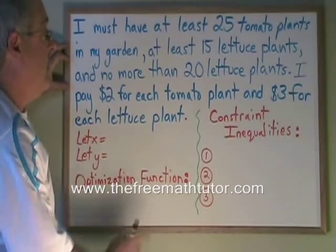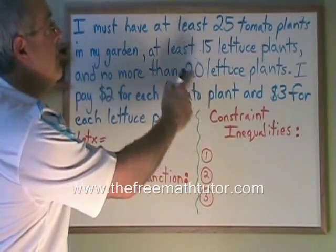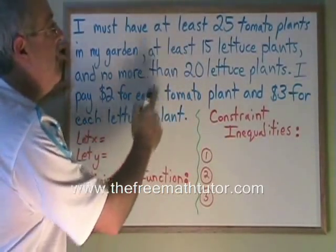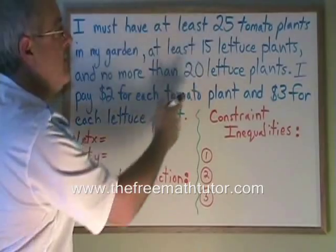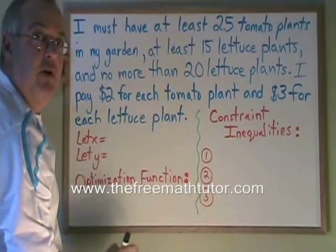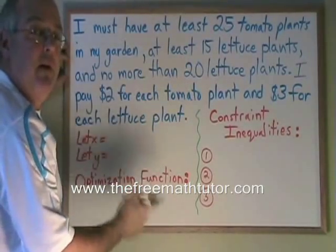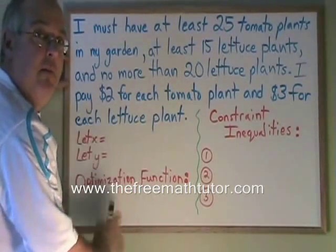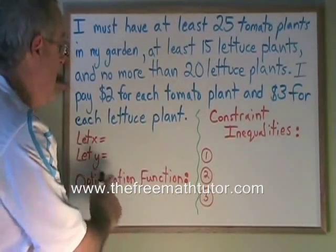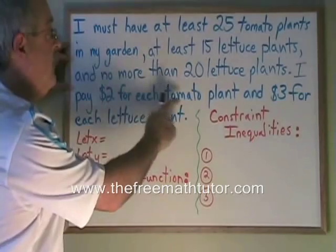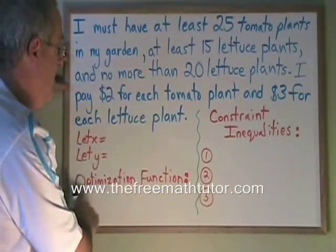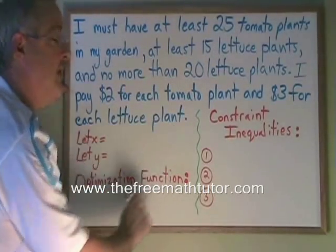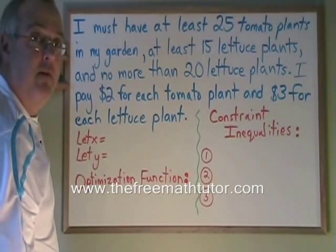The constraint inequalities tend to be all of the numbers in the situation except the numbers that have to do with money. And the numbers that have to do with money tend to be what you use in your optimization function.